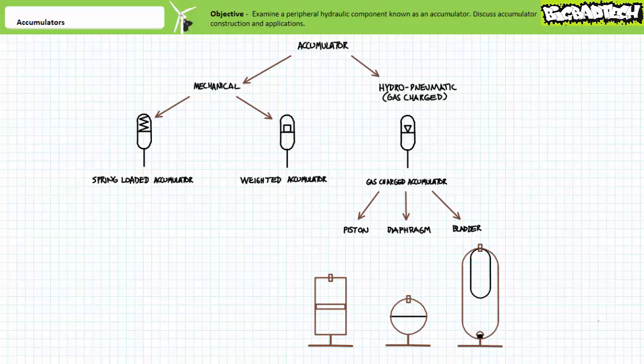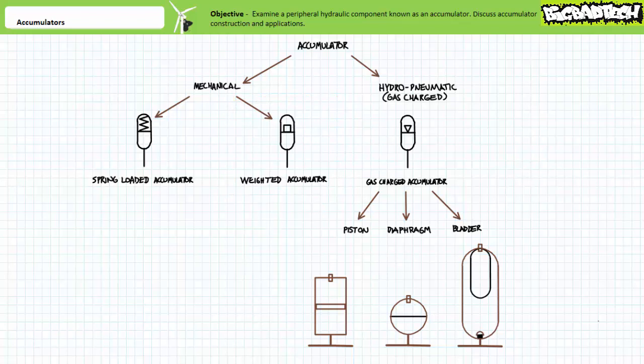A weighted accumulator swaps out the spring for a large block of concrete or metal. For obvious reasons, weighted accumulators must be mounted upright and are not suitable for all applications. One advantage of weighted accumulators is that they exhibit constant, predictable force throughout the discharge cycle, whereas a spring-loaded accumulator exerts non-linear force as a function of the spring compression rate. Both types may include a vent port on the weight or spring side to drain away any fluid that leaks past the piston. Note the schematic symbol for a spring-loaded accumulator includes a spring, and a weighted accumulator includes a block.